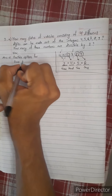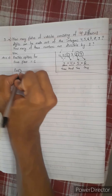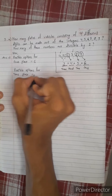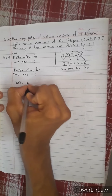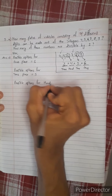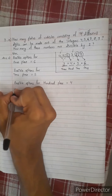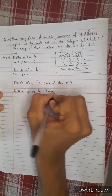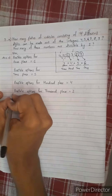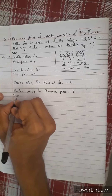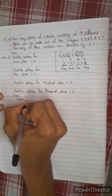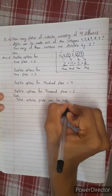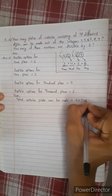For the 1st place, the 1st place has 3 possible options. For the 10th place, the 10th place has 5 possible options. For the 1st place, the 1st place has 5 possible options. Total vehicles plates can be made: 6 into 5 into 4 into 3.